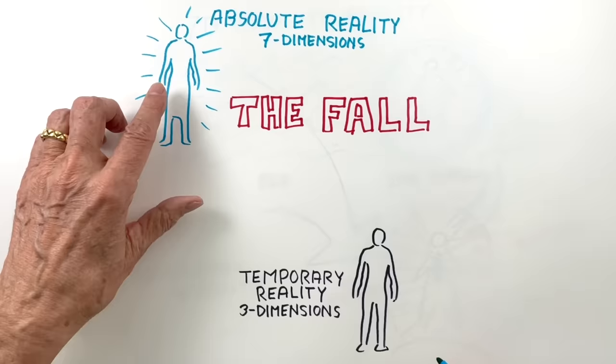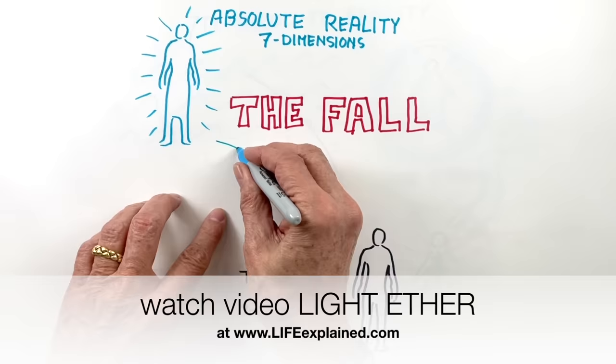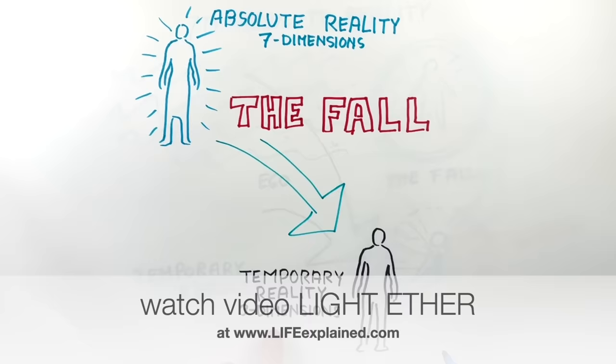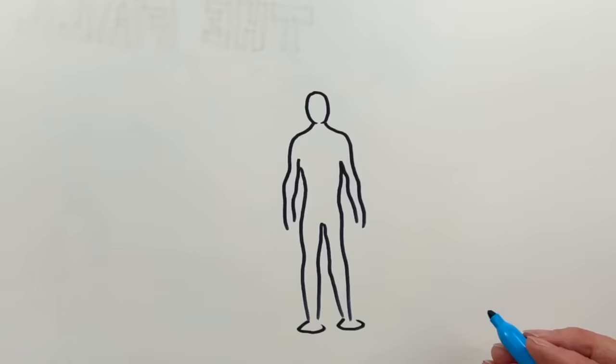This caused the fine substance of light ether of these divine beings, that we all once were, to condense and transform down into matter. And matter is part of the three-dimensional reality that we now live in. But not all matter is the same. The consistency of the human material body depends very much on the person's orientation.